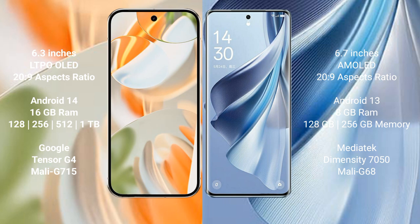Google Pixel 9 Pro comes with 16GB RAM and 28GB, 256GB, 512GB, 1TB internal storage options. It is powered by the Google Tensor G4 processor, NGP, model G715.